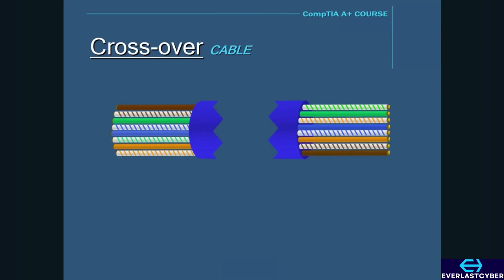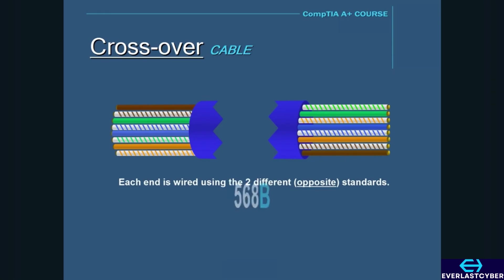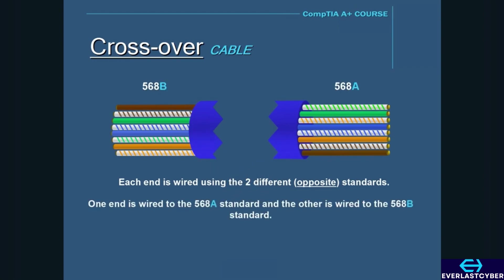Another type of cable is called a crossover cable, and this is created when both ends of the cable are wired using two different standards. For example, one end is wired using the A standard and the other end is wired using the B standard.